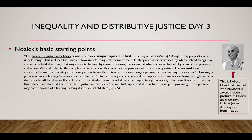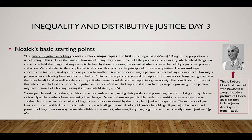Those are the first two topics of justice. Here's the third. Some people steal from others, or defraud them, or enslave them, seizing their product and preventing them from living as they choose, or they forcibly exclude others from competing in exchanges. None of these are permissible modes of transition from one situation to another, and some persons acquire holdings by means not sanctioned by the principle of justice in acquisition. The existence of past injustice raises the third major topic: the rectification of injustice in holdings. If past injustice has shaped present holdings in various ways, some identifiable and some not, what now, if anything, ought to be done to rectify these injustices?